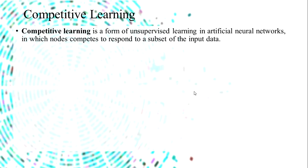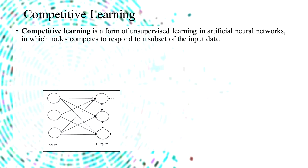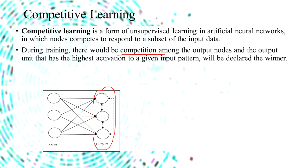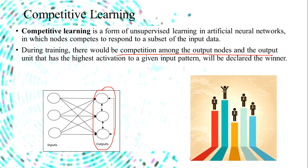All these techniques belong to the category of unsupervised learning. In competitive learning, the nodes compete with one another in order to respond to the input data. The output nodes compete during training, and the output unit that has the highest activation to the given input pattern — that is, the highest output — is declared as the winner node.